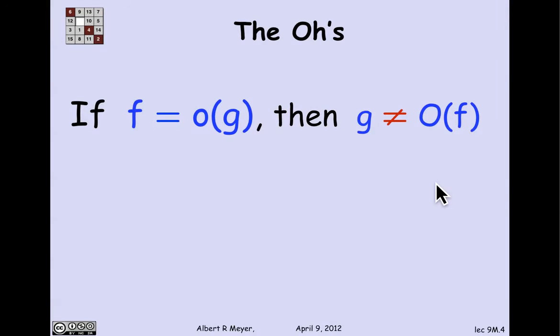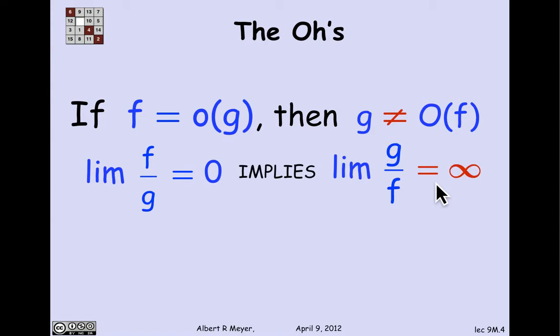Another such property is that if f is much less than g, then g is not roughly less than f. More precisely, if f is little o of g, then g is not big O of f. The left-hand side says that the limit of f over g is 0. But that implies that the limit of g over f is 1 over 0 or infinity, which means it's not finite. So g is not big O of f.